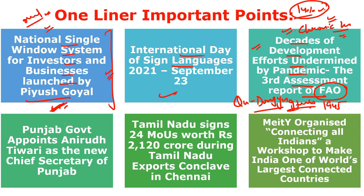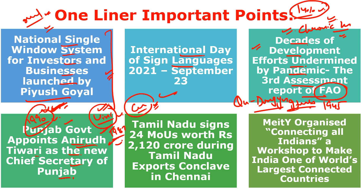Punjab government appointed Anirudh Tiwari as the new Chief Secretary of Punjab. Earlier, Vini Mahajan was appointed as Chief Secretary by Captain Amarinder Singh, but after Captain Amarinder Singh resigned, the position went to Anirudh Tiwari. New Chief Minister Charanjit Singh Channi approved the appointment of Anirudh Tiwari, a 1990 batch IAS officer, as the new Chief Secretary. He succeeds Vini Mahajan, who was a 1987 batch IAS officer.